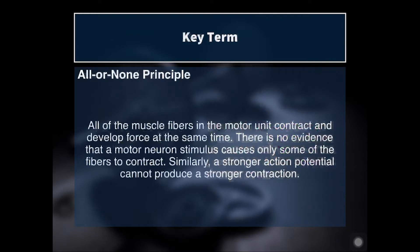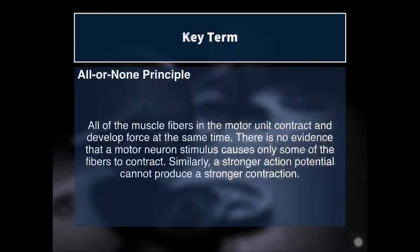There's an important principle we have to talk about: the all-or-none principle. It states that either all muscle fibers of a motor unit contract or none of them contract. So if that alpha motor neuron sends a contractile signal to the muscle fibers, they will all contract together or none of them will contract at all. There is currently no evidence that a motor neuron stimulus causes only some fibers to contract, and likewise a stronger action potential cannot produce a stronger contraction. So how do we exhibit different amounts of force? How do we grade the force output?